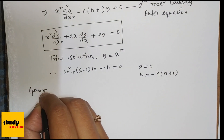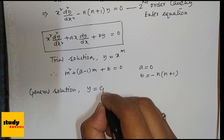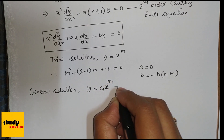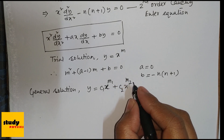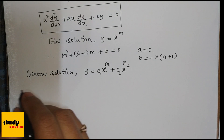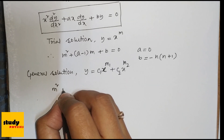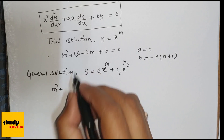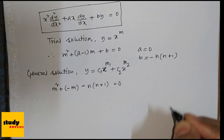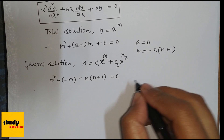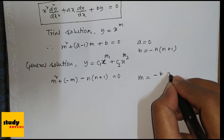The general solution is y = c₁x^m₁ + c₂x^m₂, where m₁ and m₂ are the roots of the characteristic equation. So we solve: m² − m − n(n+1) = 0.